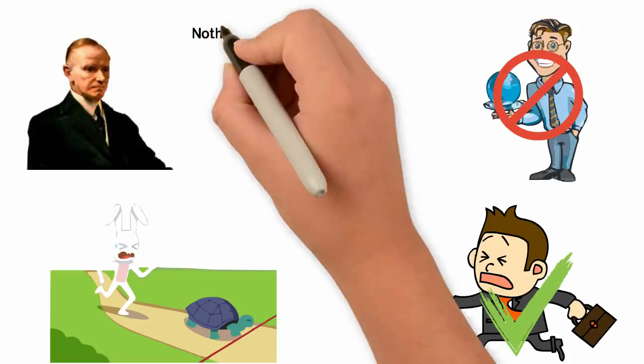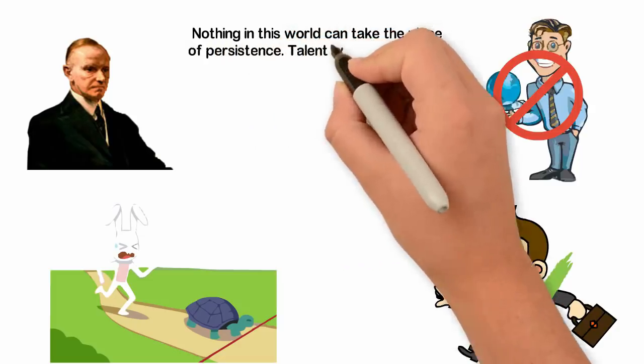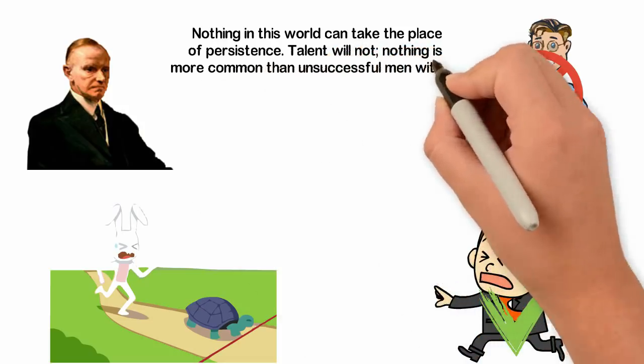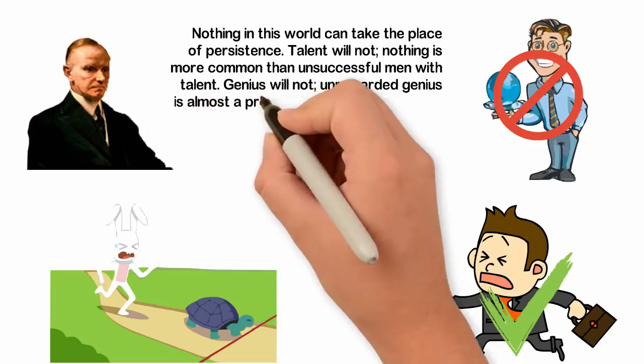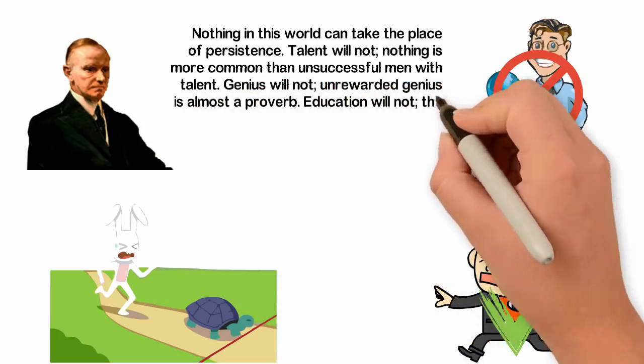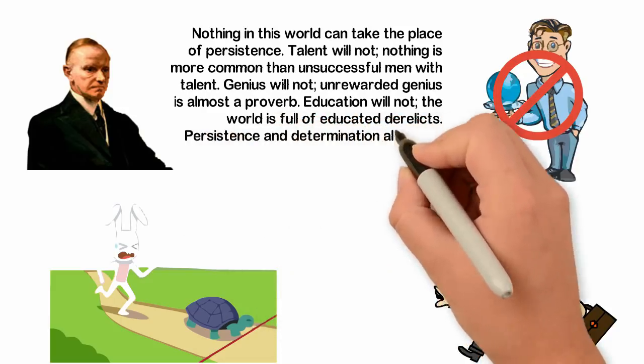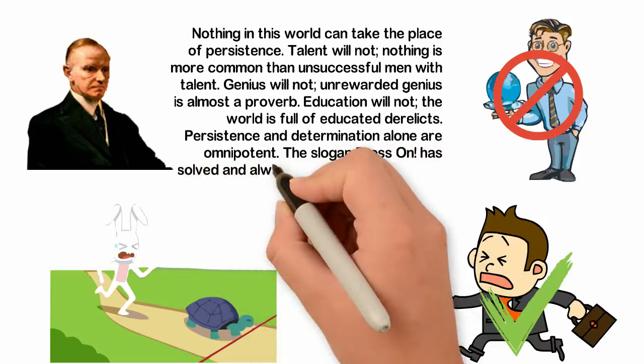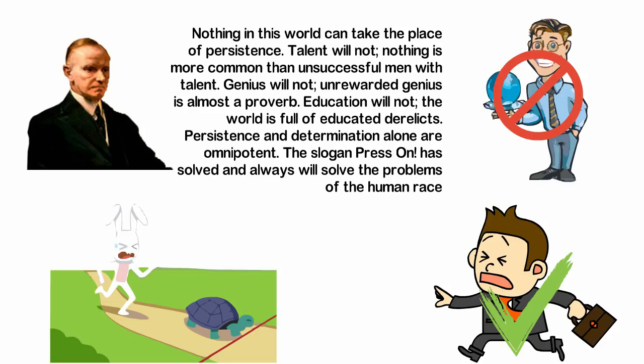Calvin Coolidge said, Nothing in this world can take the place of persistence. Talent will not. Nothing is more common than unsuccessful men with talent. Genius will not. Unrewarded genius is almost a proverb. Education will not. The world is full of educated derelicts. Persistence and determination alone are omnipotent. The slogan, Press on, has solved and will always solve the problems of the human race.